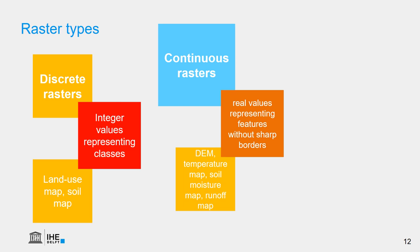A map with temperatures, soil moisture, or runoff — these don't have sharp boundaries and cannot be represented in vector format.